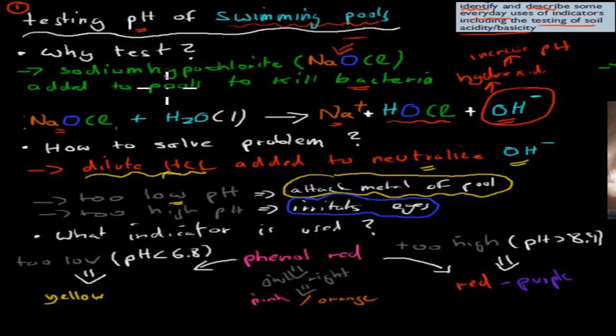So we've said okay why do we test our pH? We test pH because the pH is increased because we use sodium hypochlorite to kill bacteria. What do we do to be able to combat it? If we know our pH is too high we can use that hydrochloric acid to neutralize it. But the problem is how do we figure out if our pH is too high or too low?